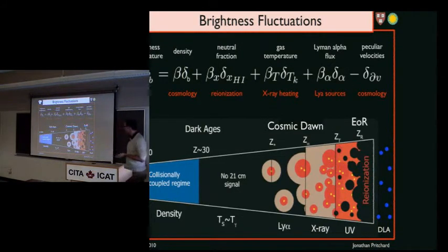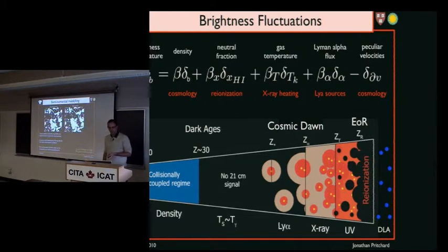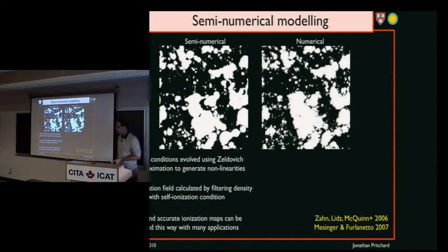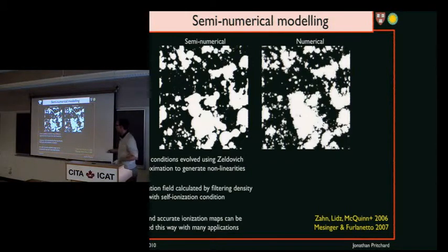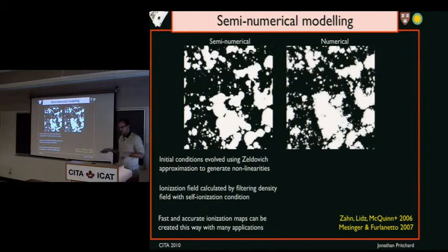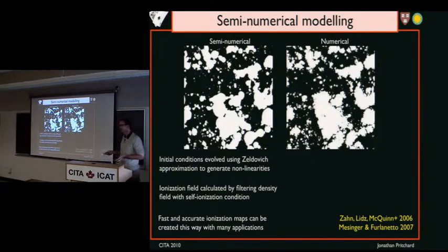People have moved forward with more detailed numerical models. One interesting technique is the semi-numerical model. One can do a full N-body simulation and ray-trace photons to calculate the ionization field. But to understand the physics well, you'd like to have very large box sizes and be able to run those for many different astrophysical models. So ideally you want something you can run quickly. That's where semi-numerical things come in. The idea is that you make a realization of the density field from Gaussian initial conditions, evolve it using the Zel'dovich approximation to put in some non-linearities, and then calculate the ionization field from that density box quite accurately using the excursion set formalism.